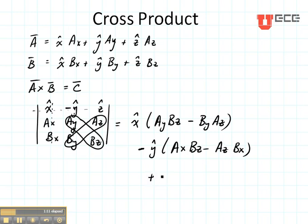And then for the Z component, again we eliminate the row and column that the Z is in, do the determinant which is going to give us AXBY minus AYBX. So this is how we calculate the cross product.